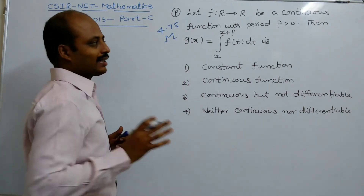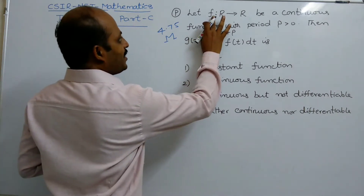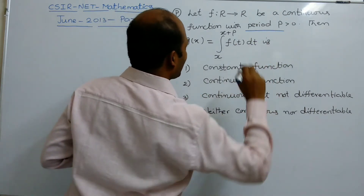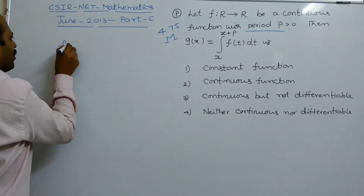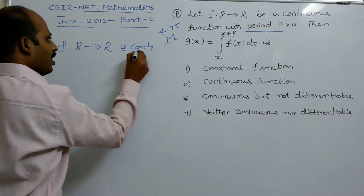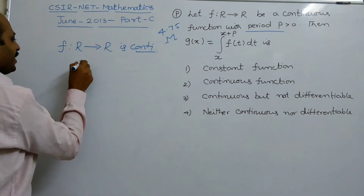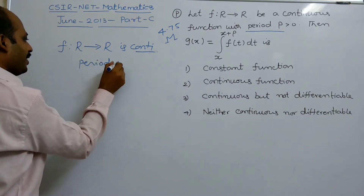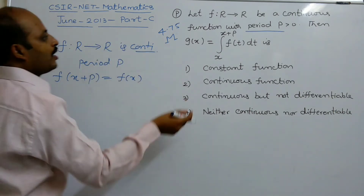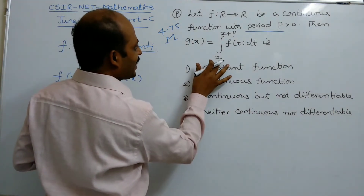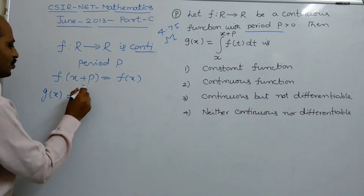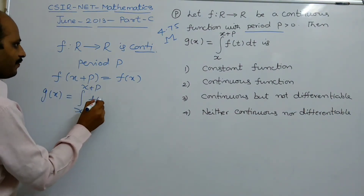There may be more than one correct answer. The problem is: f maps ℝ into ℝ is a continuous function with period p greater than 0, meaning f(x + p) = f(x). And g(x) is defined as the integral from x to x + p of f(t) dt.